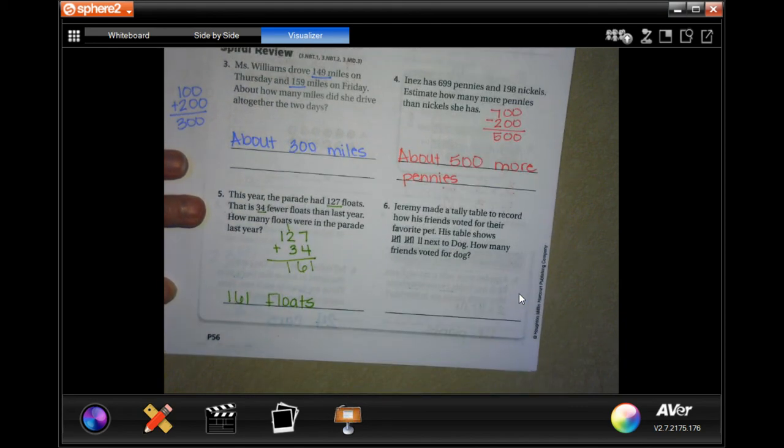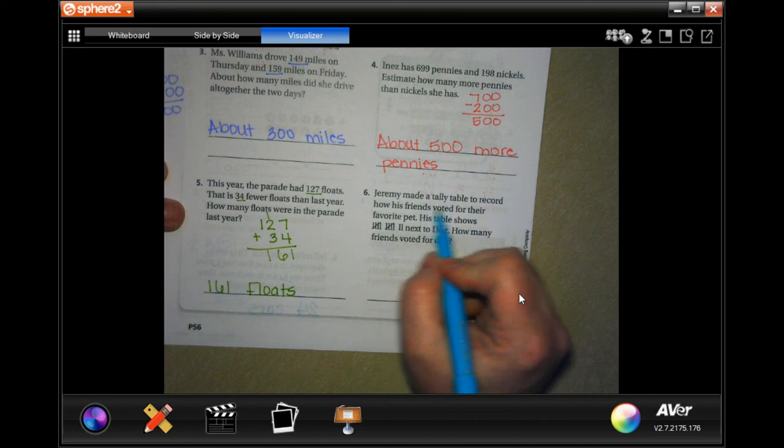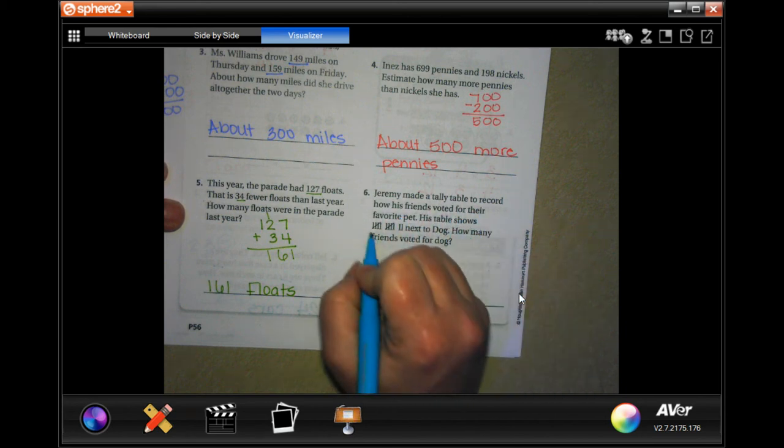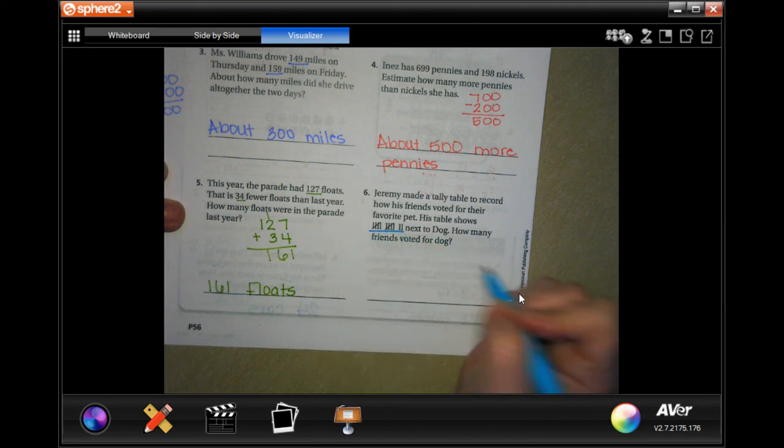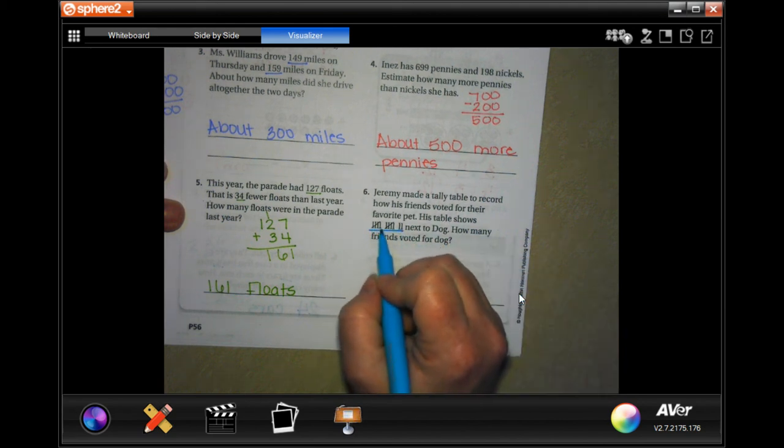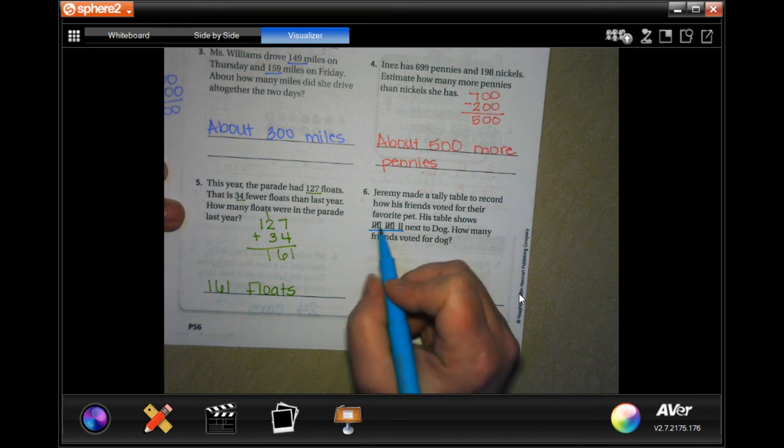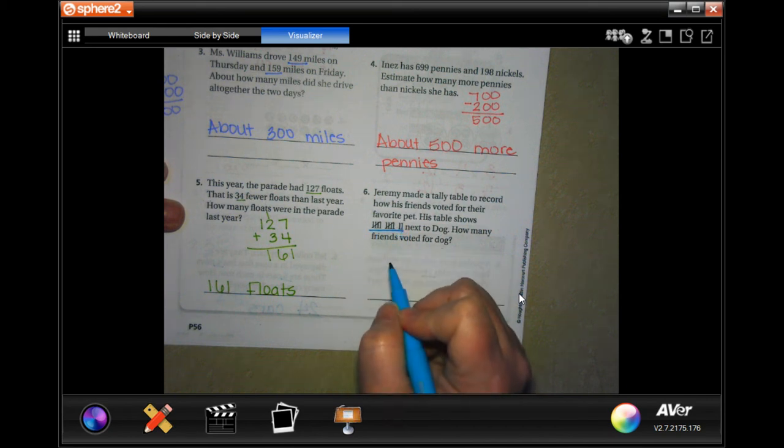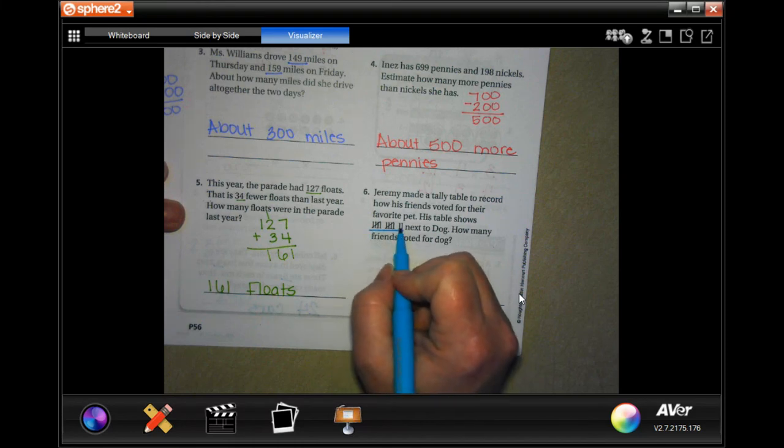Jeremy made a tally table to record how his friends voted for their favorite pet. His table shows this next to a dog. How many friends voted for a dog? Well, when you have 4 down and 1 across, that means 5. We're going to have 5, 10. And then each one of these is just 1. So, 5, 10, 11, 12. 12 friends.